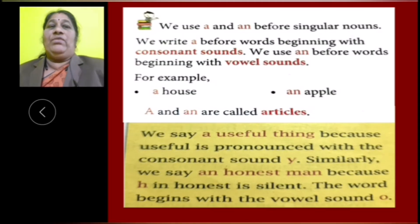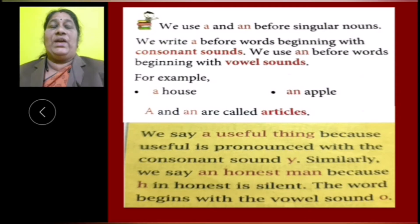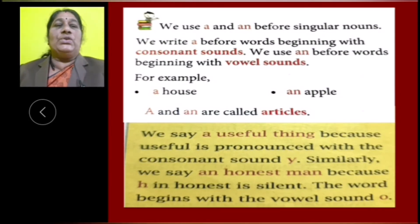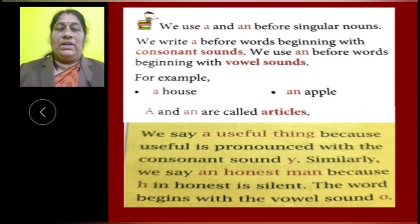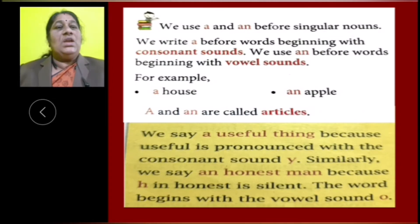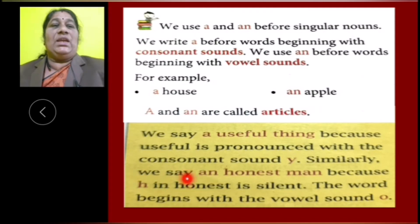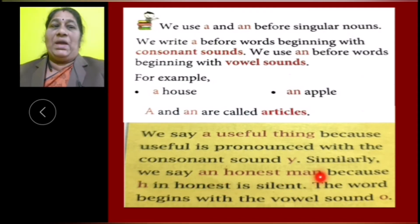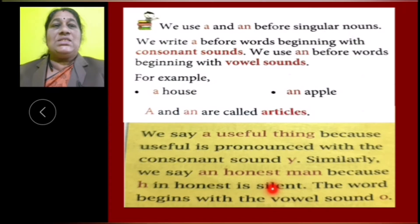Children, we say 'a useful thing' because useful is pronounced with the consonant sound Y. Here, the word useful started with a vowel letter, but it is pronounced with the consonant sound Y. Similarly, we say 'an honest man' because H in honest is silent. The word begins with the vowel sound O.